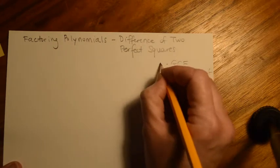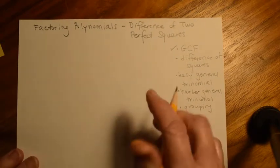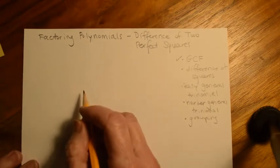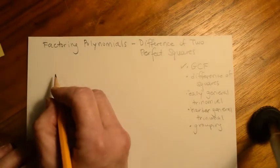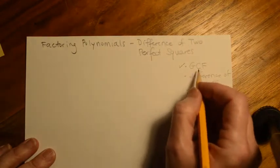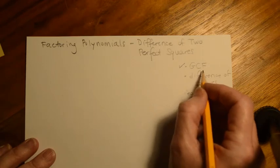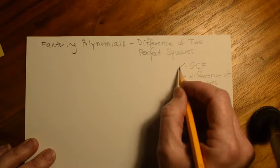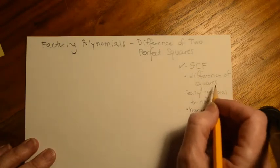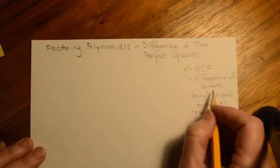So we've done GCF already, and now we're on to Difference of Squares. But before I teach you how to do factoring by Difference of Squares, I want you to see a certain type of multiplying that's going to result in us doing Difference of Squares — just like when we talked about GCF, we first talked about distributing so we could see how to undistribute.